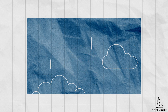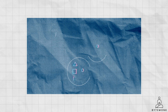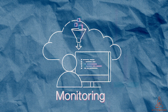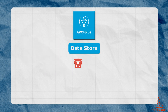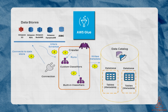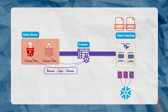AWS Glue is a fully managed service offered by Amazon Web Services, meaning that it can automatically handle server and resource provisioning, scaling and monitoring. In this video, I will teach you the basics of the ETL process and how to get started with AWS Glue. We will also look into the basics of the Glue data catalog, set up crawlers, and create an ETL job to extract data from sources like S3 and transform it into a format that is easy to analyze.